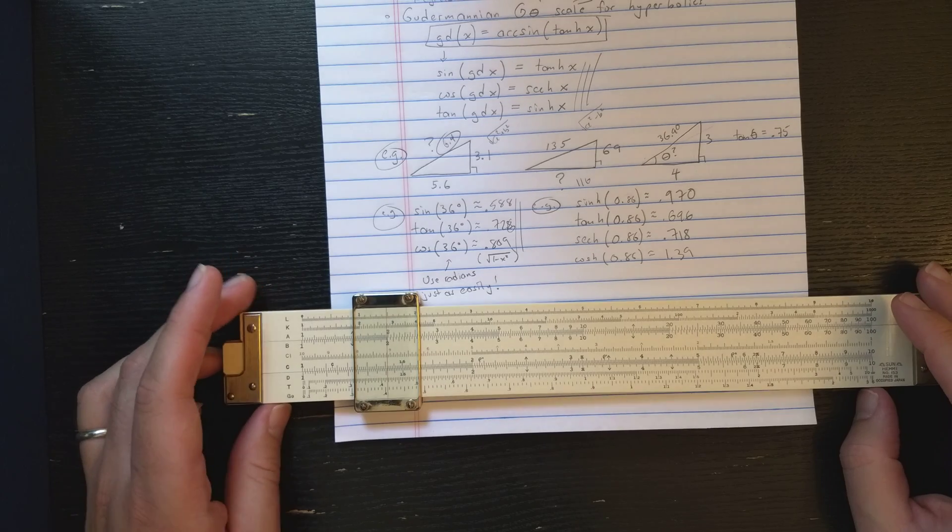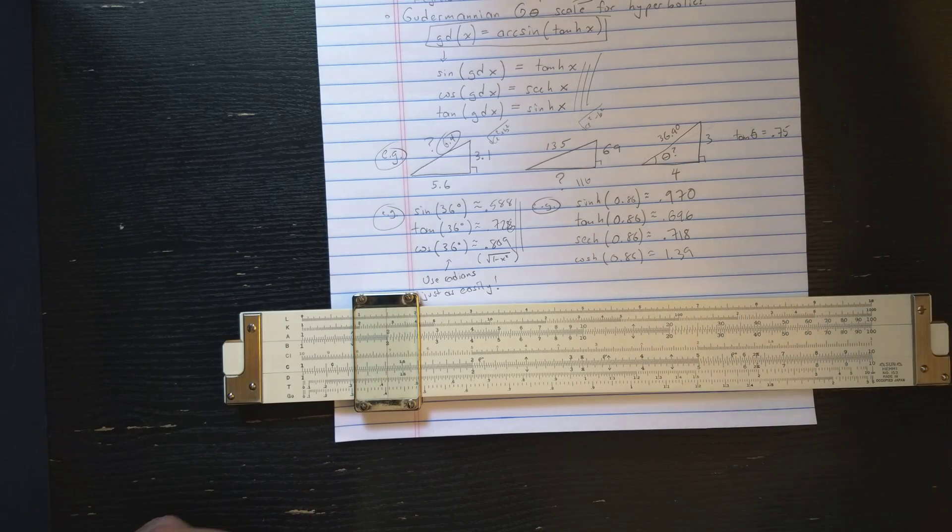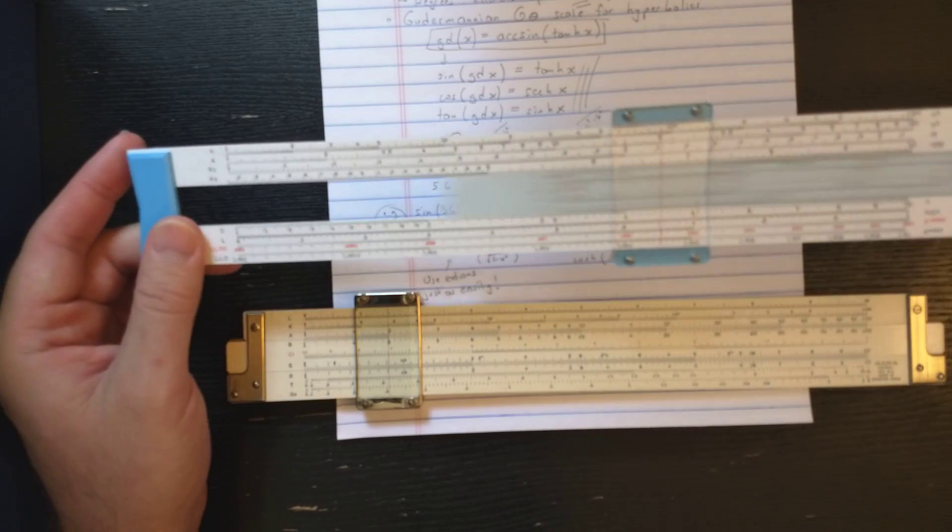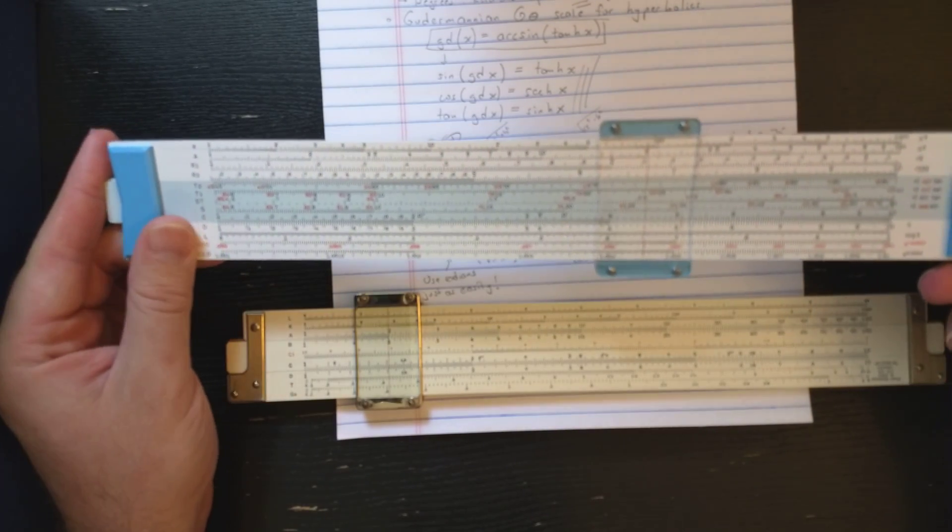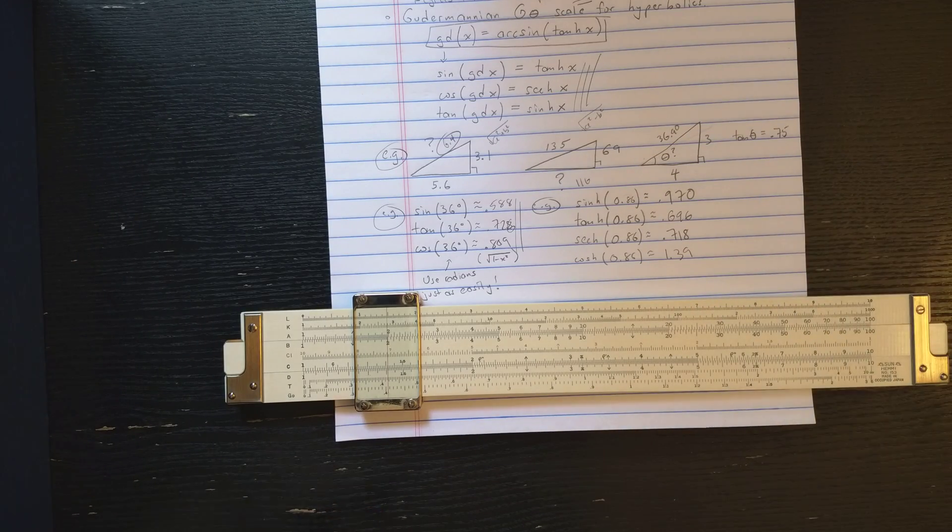Which is kind of the downside of this slide rule. Things you could do on standard trigonometric or hyperbolic scales without a transfer, such as multiply or divide. Here on the HEMI 153, you need to perform a transfer to do that.